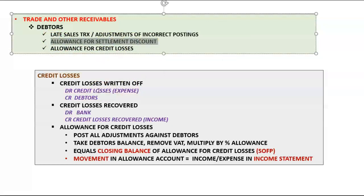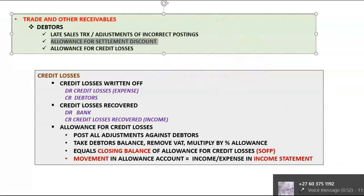To calculate the allowance for settlement discount: take the invoice value, remove VAT, then multiply by the settlement discount percentage. In some questions you may be given the settlement discount allowance amount but not the debtors control balance, requiring you to work backwards: divide the allowance amount by the settlement discount percentage to get the VAT-exclusive debtors balance, then add 15% VAT to get the debtors control balance. For credit losses written off: debit the credit losses expense account and credit debtors — if VAT is involved, use the VAT-exclusive amount.